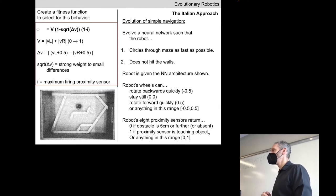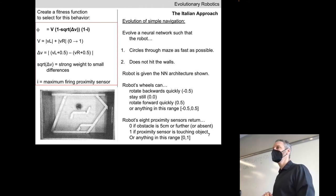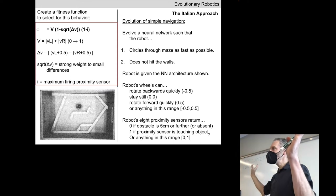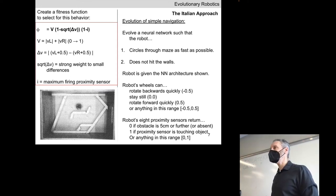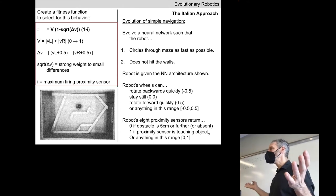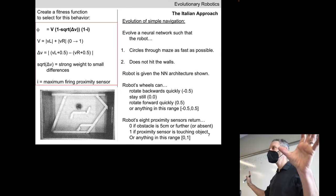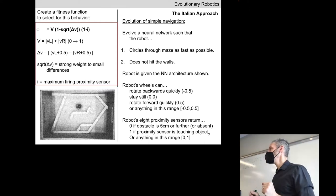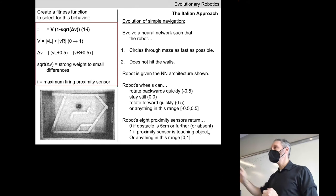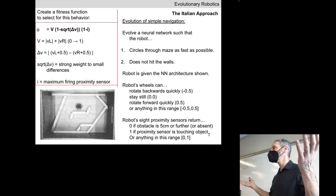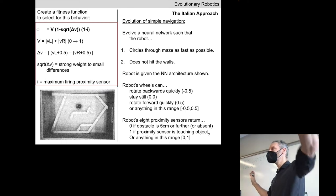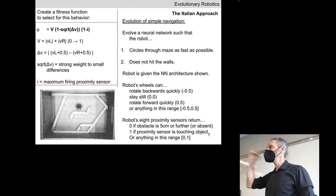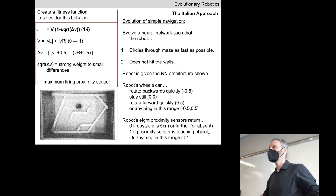So evolution very quickly selects for neural networks that get maybe low but at least non-zero values for all terms — kind of forcing evolution to find the rudiments of both behaviors, move and don't crash, and then gradually improve them. If we add the terms, evolution can sometimes be lazy and sacrifice one term and focus on the other, just going as fast as possible and crashing.